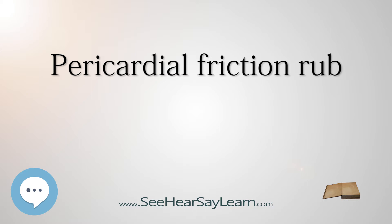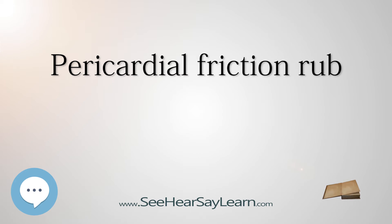Cause. The pericardium is a double-walled sac around the heart. The inner and outer — visceral and parietal, respectively — layers are normally lubricated by a small amount of pericardial fluid, but the inflammation of the pericardium causes the walls to rub against each other with audible friction. In children, rheumatic fever is often the cause of pericardial friction rub.